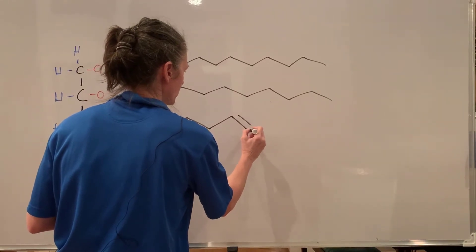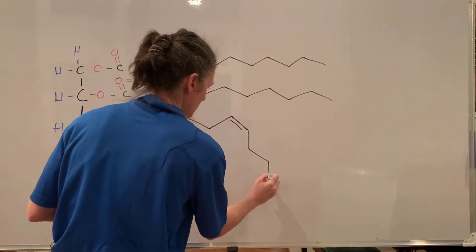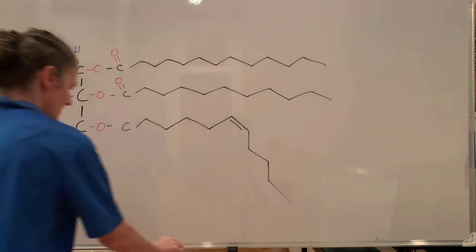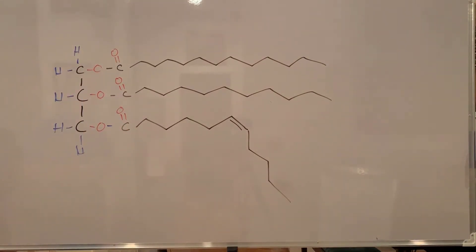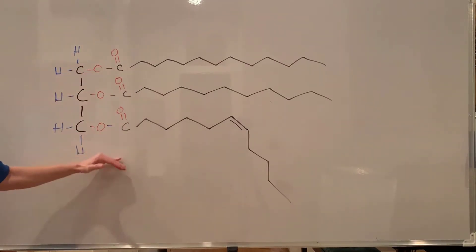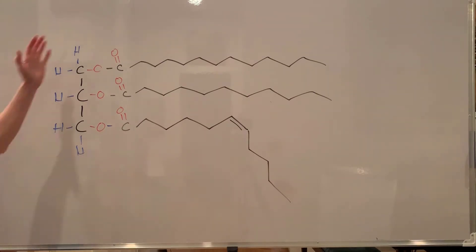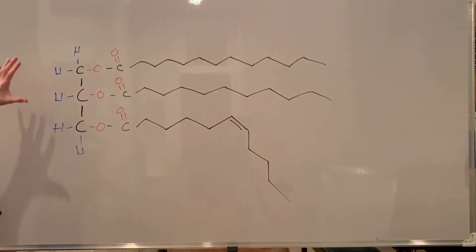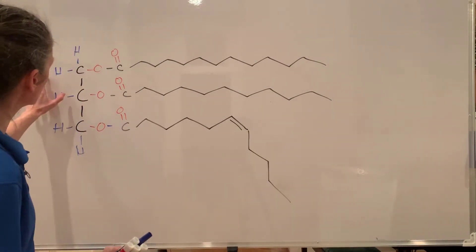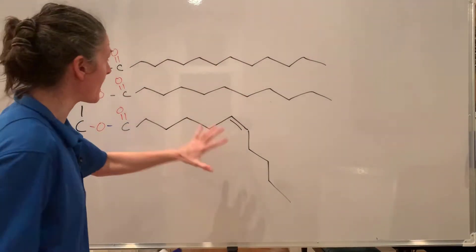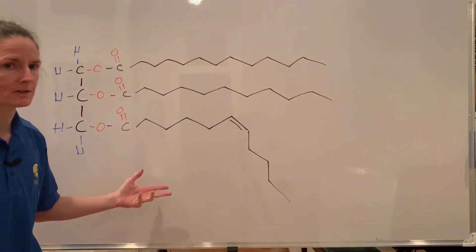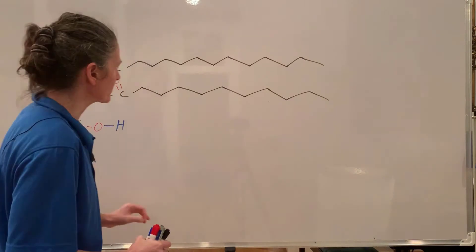We can link a third fatty acid — this one with a double bond so it's kinked — onto the glycerol molecule. Once all three positions are filled, we have a triglyceride and there's no more room for additional fatty acids. Think of glycerol as a keychain that can hold up to three fatty acid keys.